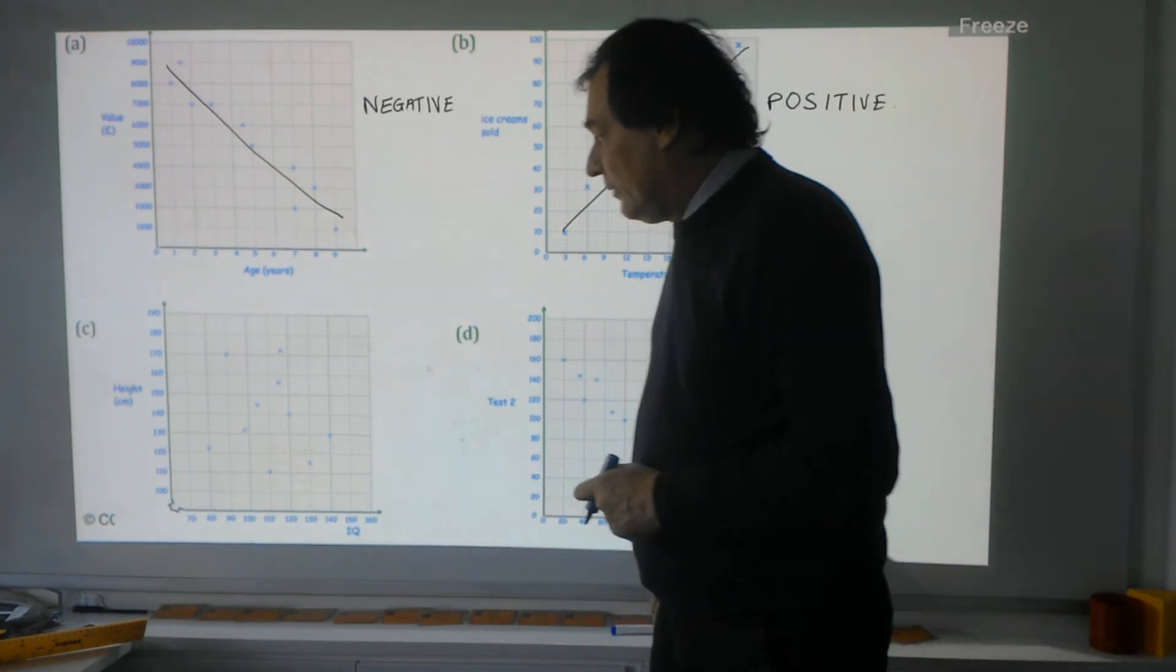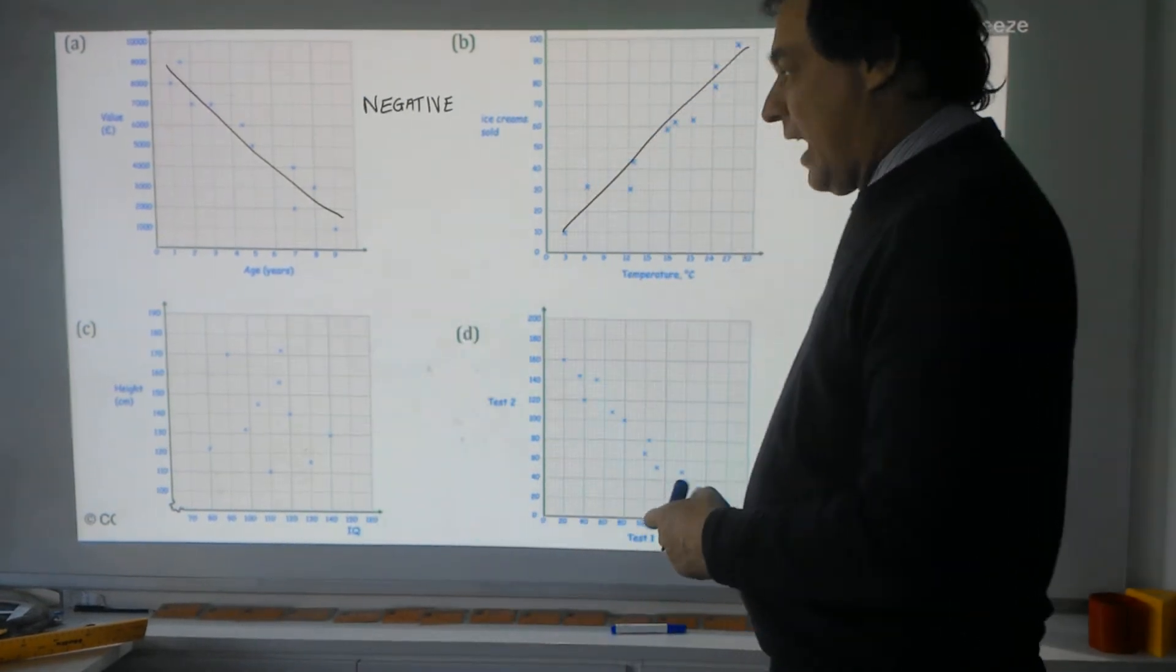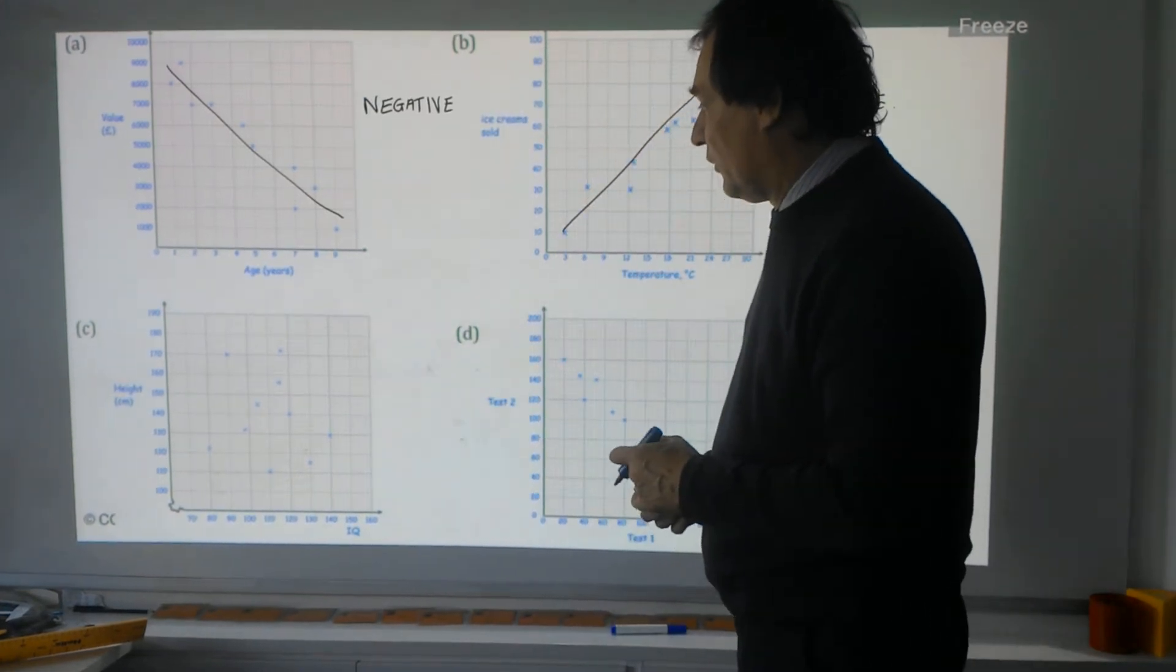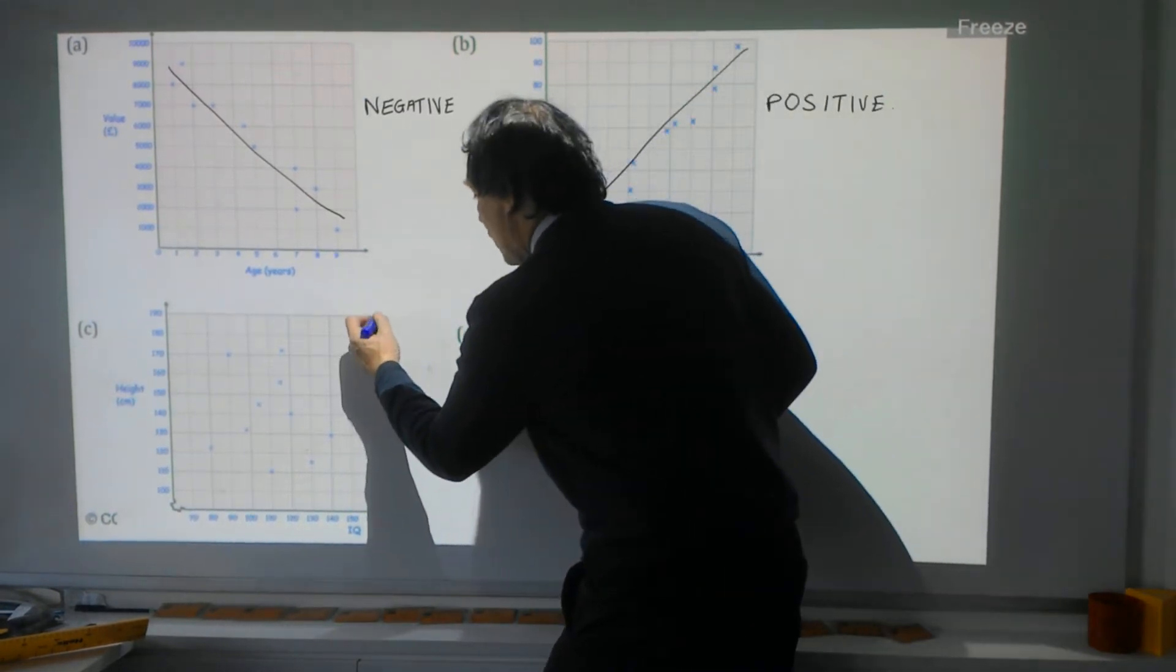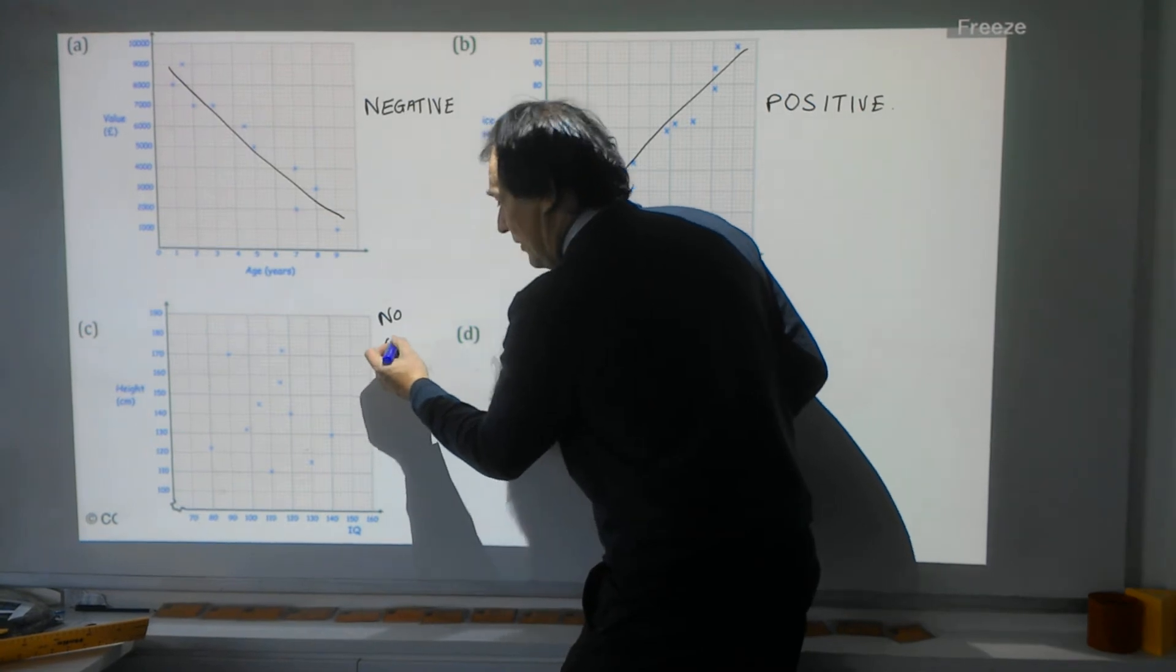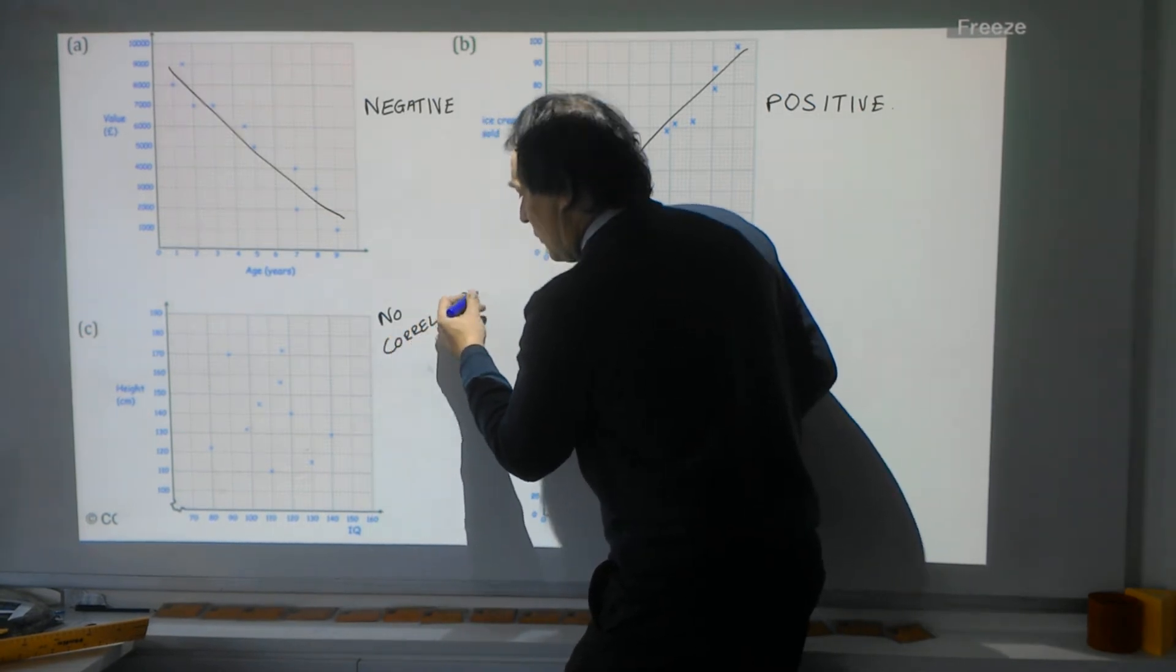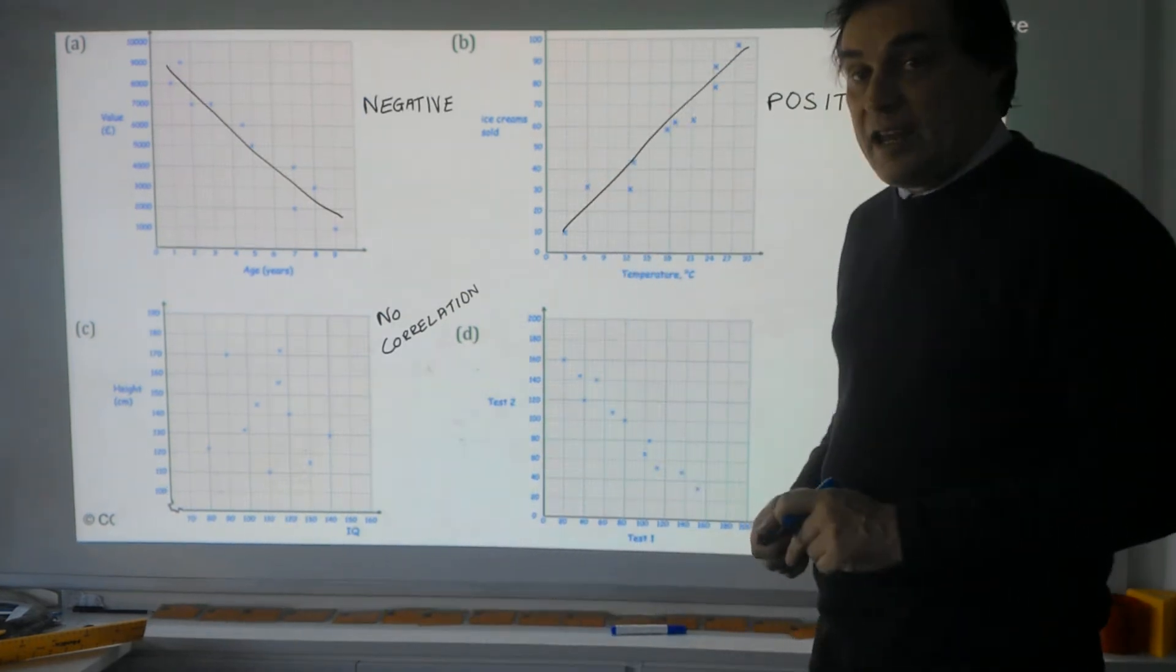Over here, we've got crosses everywhere, and I really can't get a line to describe a general trend on that. That is called no correlation. If there's no pattern, we describe it as having no correlation.